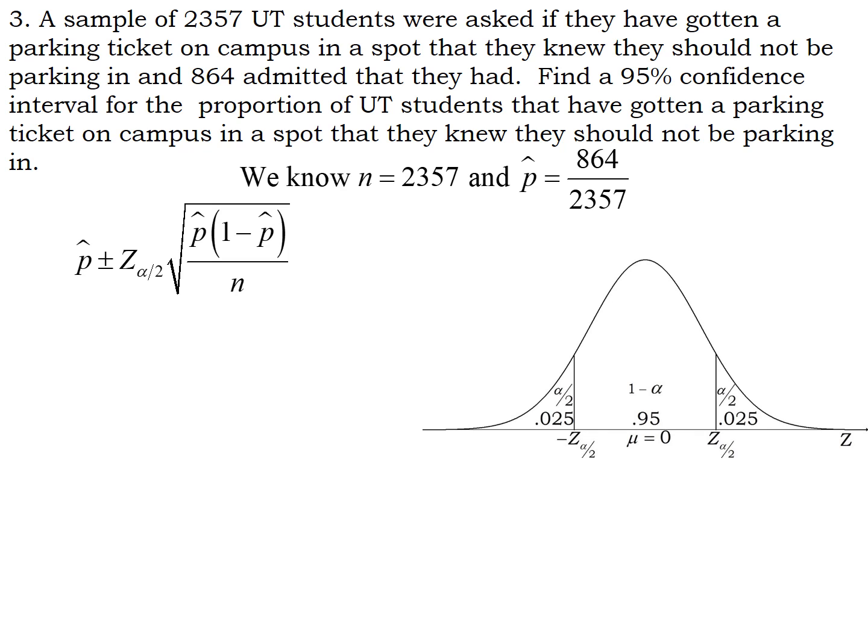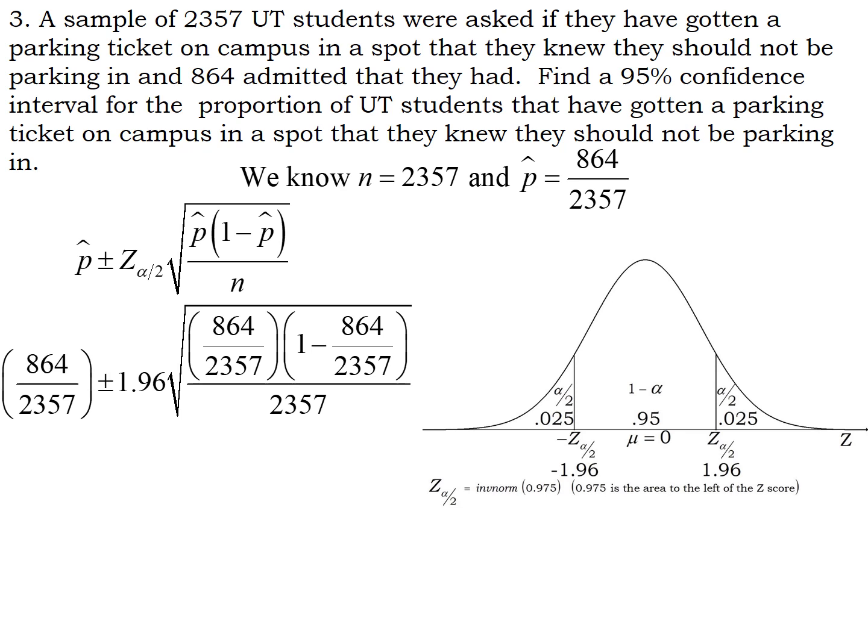So we know n and p-hat. The work here is to find the Z score. And you get 95% confidence. So you're in the middle. It needs to be 0.95. Draw the graph. Then you'll see the numbers. Split the extra probability in half. 0.025 in each tail. Use your inverse norm and you have your Z score. Now it's a matter of plugging in the numbers. And p-hat everywhere. See p-hat goes the fraction 864 out of 2,357. Your Z score, we just determined to be 1.96.